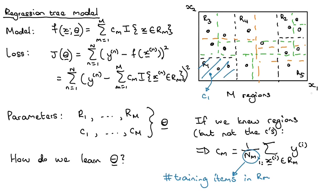The problem is that we're not given the regions. One strategy could be to try and consider every possible partitioning of the input space, calculate the corresponding C values for that partitioning, and see what the loss would be. Then we try to find the best possible partitioning and values of C. But the problem is that quickly becomes computationally intractable, so we need a different strategy.